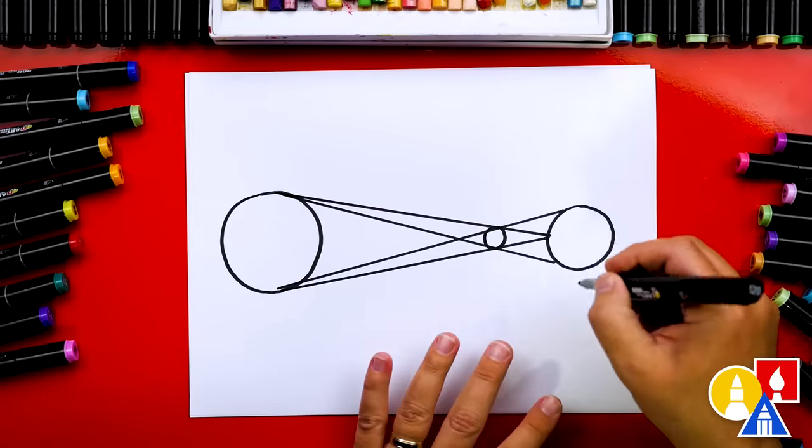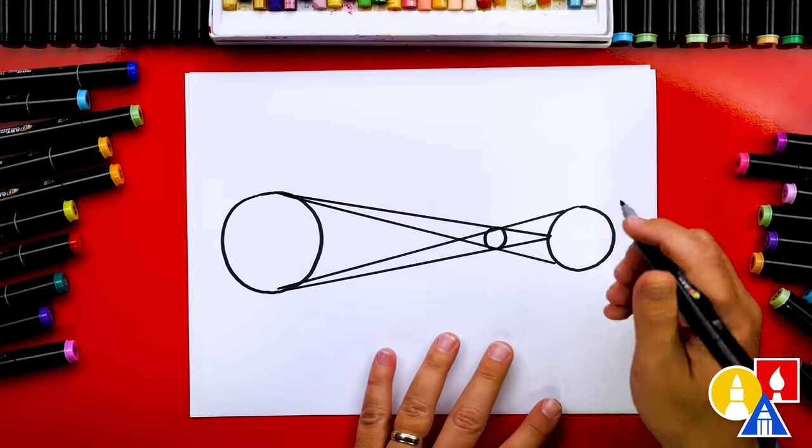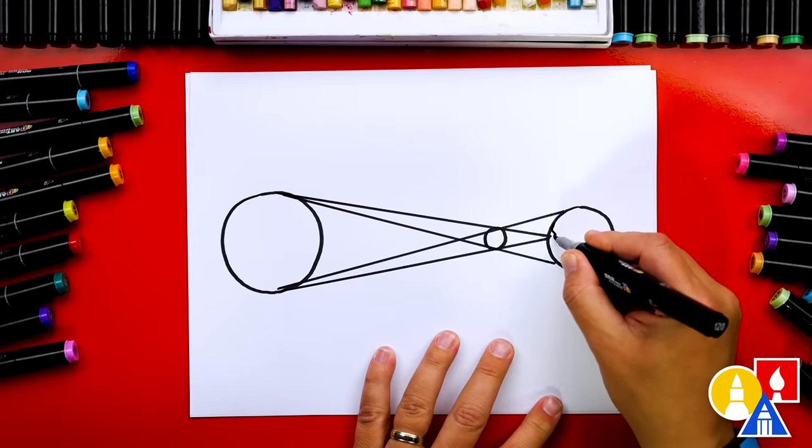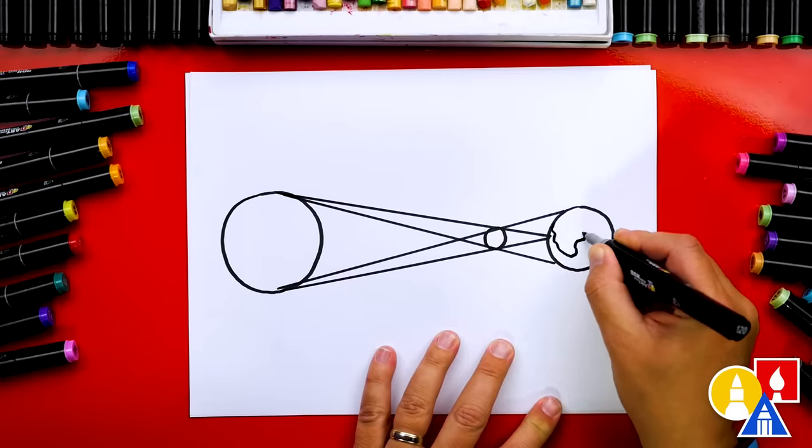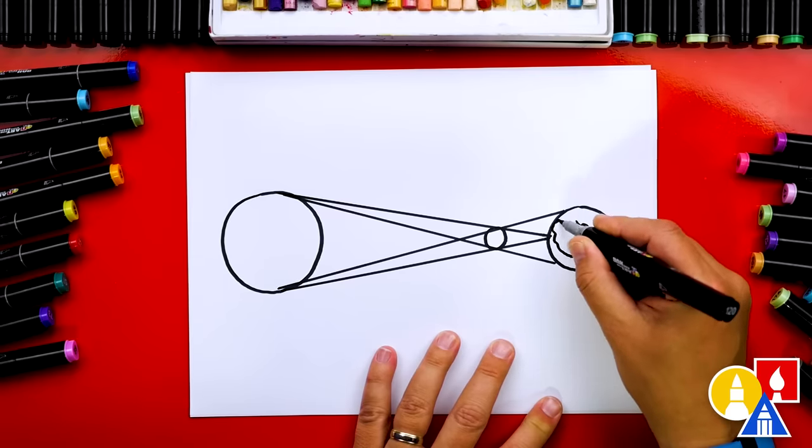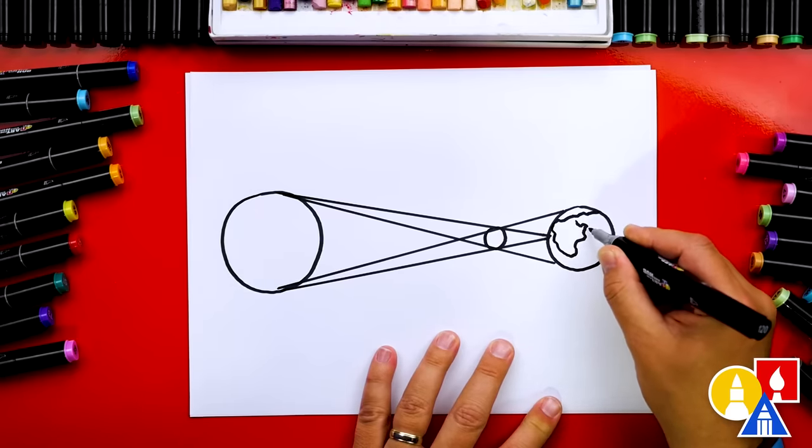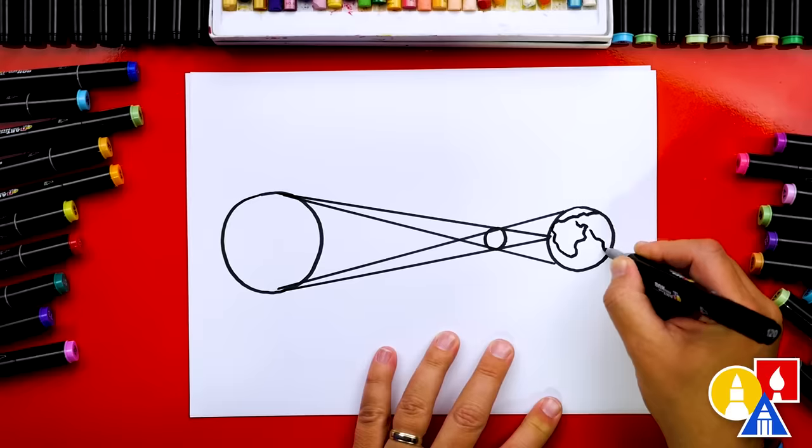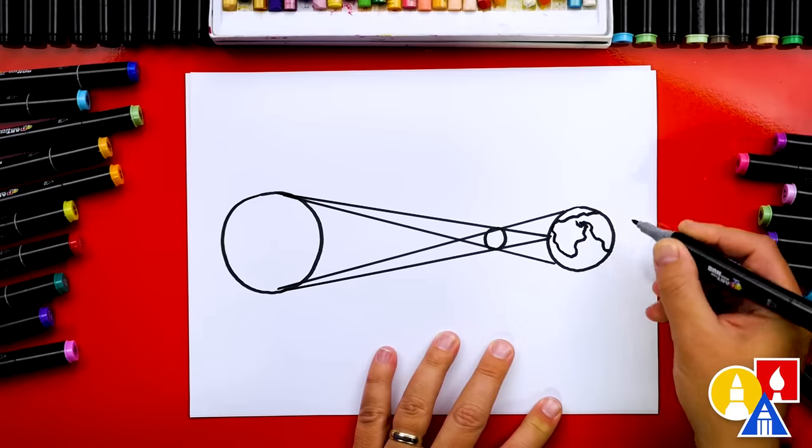Okay now let's add a little extra details so you know this is the earth. We'll just add squiggly lines for continents and I don't know which continent this is. That's okay. We're just gonna draw them in there.